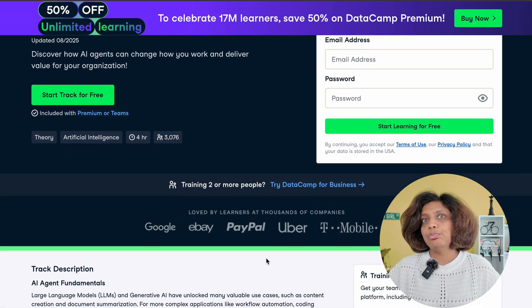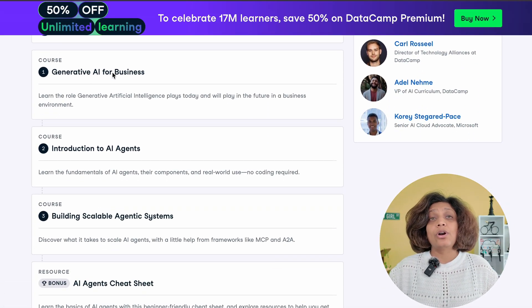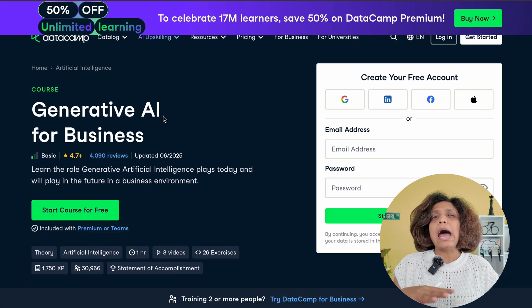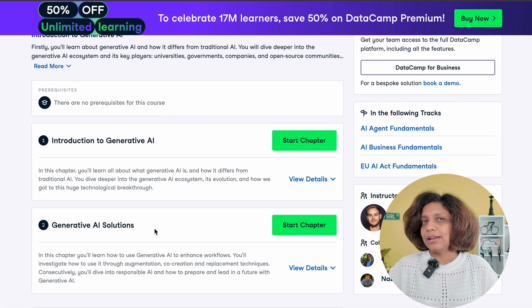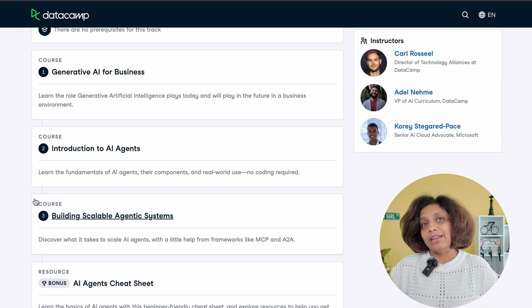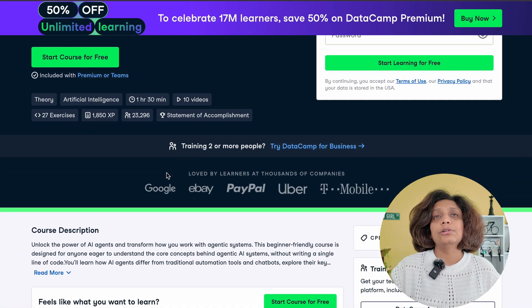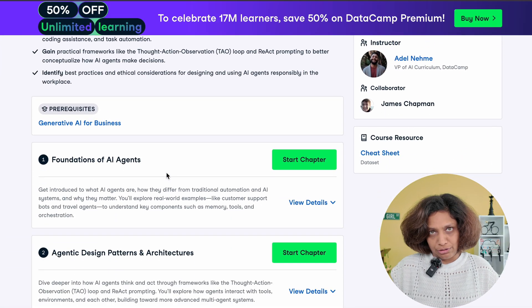I've used Datacamp for years to level up my own skills, and what I love about this is how practical their courses are. This track is perfect for beginners, no prerequisites, and it guides you step-by-step, starting from generative AI for business, to see how these technologies actually get applied in real world. Next, it's the introduction to AI agents, which breaks down the core concepts into real-world use cases with zero coding.